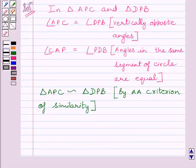Now this completes the first part of the question. Now for the second part, we know triangle APC is similar to triangle DPB. This we have already proved above.